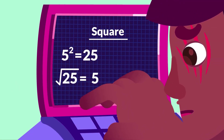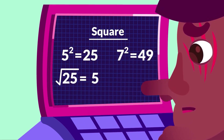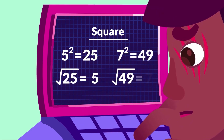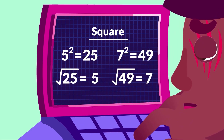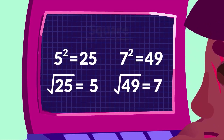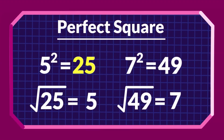Similarly, 7 squared is 49, therefore the square root of 49 is 7. These special numbers, like 25 and 49, are called perfect squares.